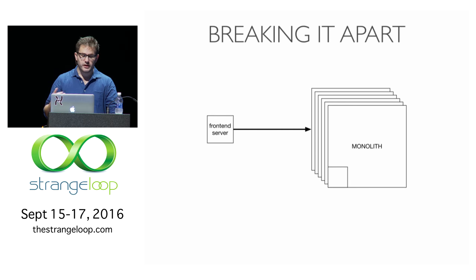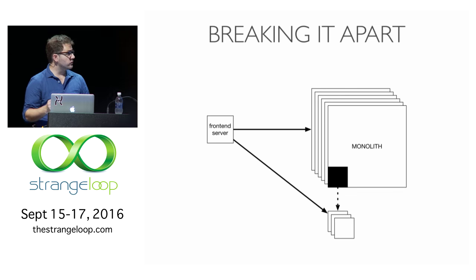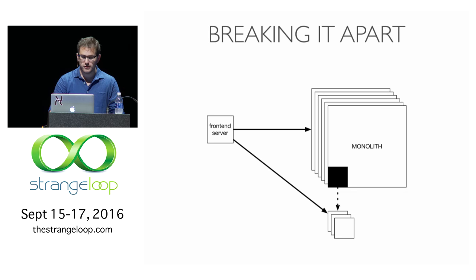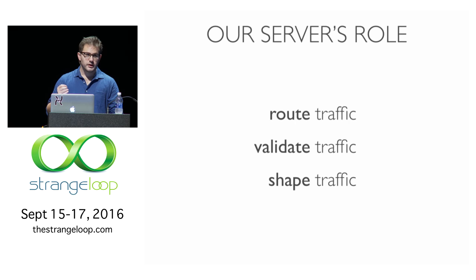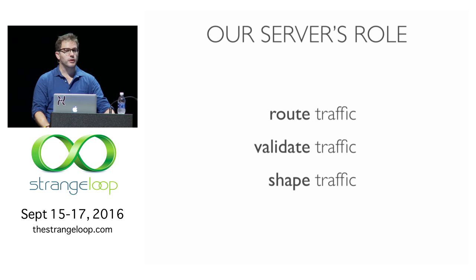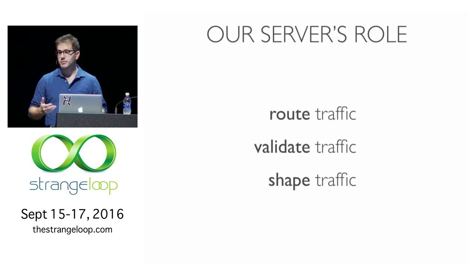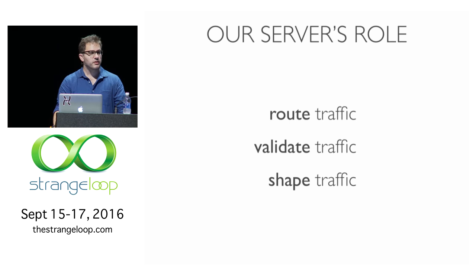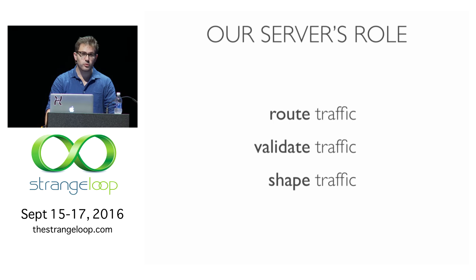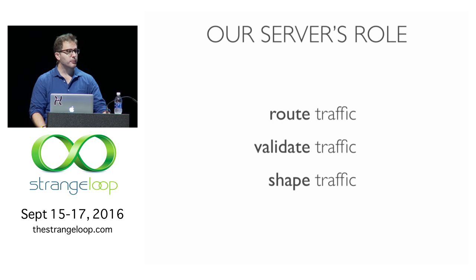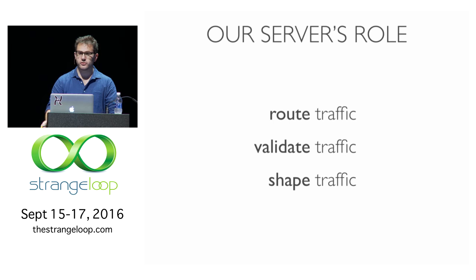The front-end server exists so that when we start to cordon off pieces of code and pull them out into their own little piece, we can route traffic to it. This allows us to think about things more modularly. The role of our server is to route traffic — make sure it goes to the right place, the right service is receiving requests. It's to validate traffic, make sure requests are well-formed, conforming to the HTTP spec, authenticated, and not pathological in some way. It will also shape or prioritize traffic — if our back-end is under load, it's our job to decide which requests go overboard first.